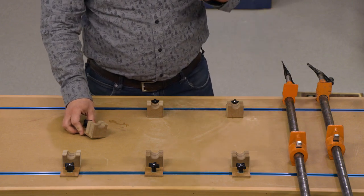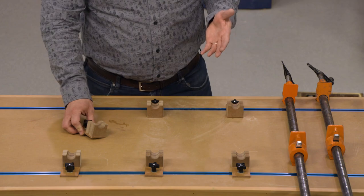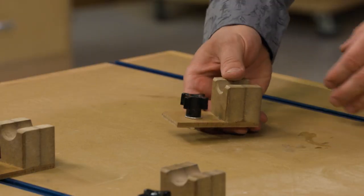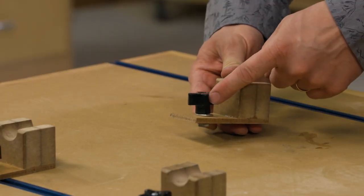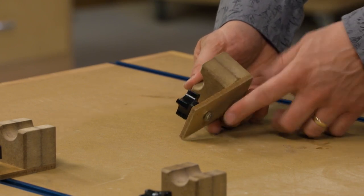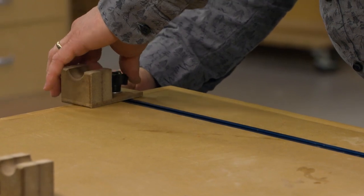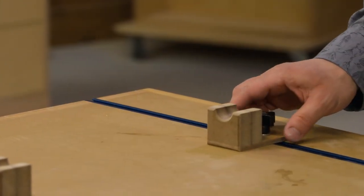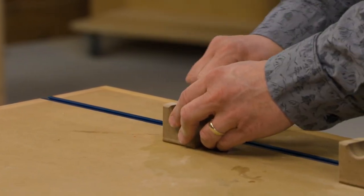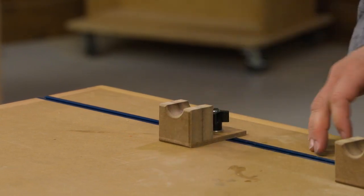Then the cradle attaches to the t-track with a knob and a bolt that slides right into place, so that way you can lock it down.